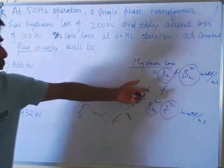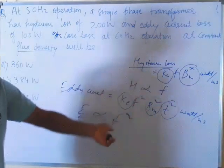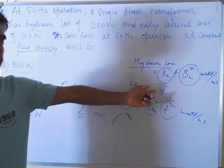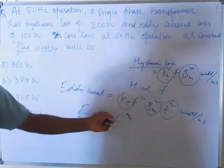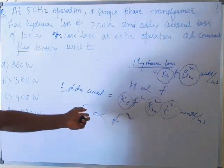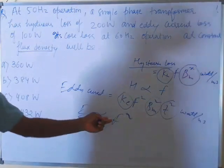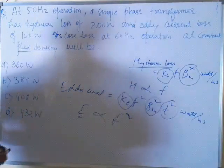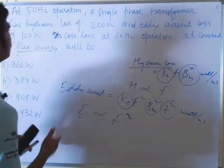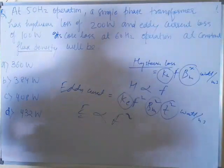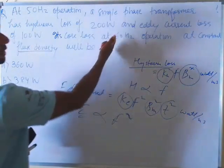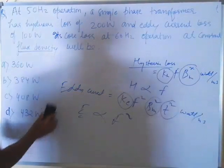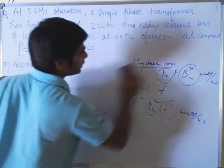So both losses are dependent on frequency: hysteresis loss is directly proportional to frequency, and eddy current loss is proportional to the square of frequency. We are required to calculate the new hysteresis loss and eddy current loss at 60 Hz.